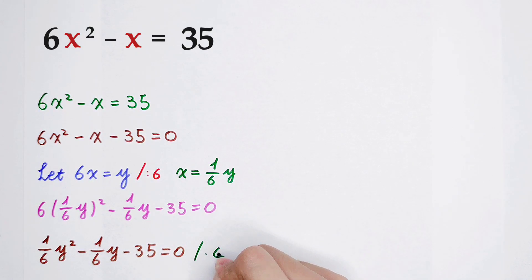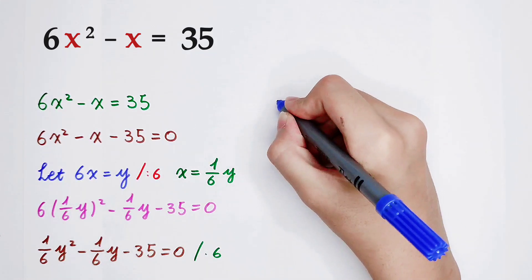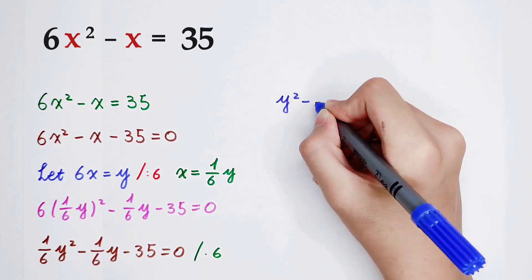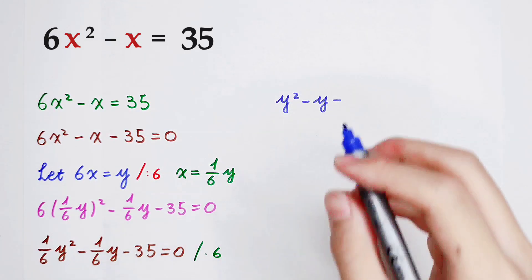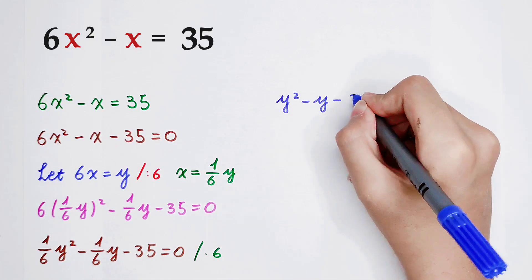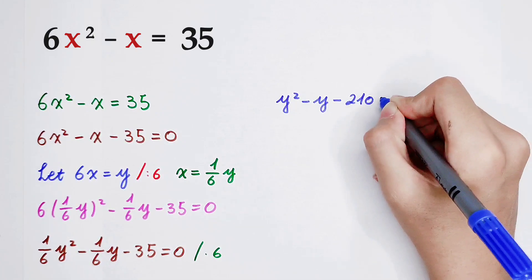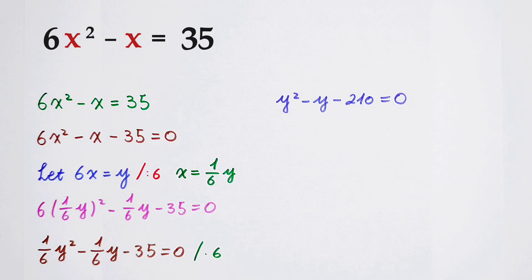We multiply by 6 on both sides. Then y squared minus y, and then minus 6 times 35 is 210, equals 0.